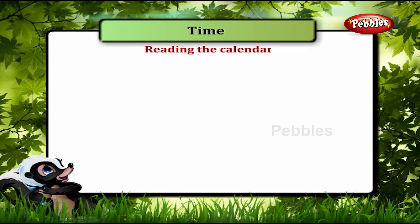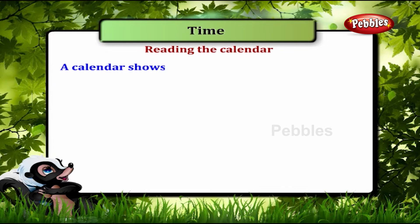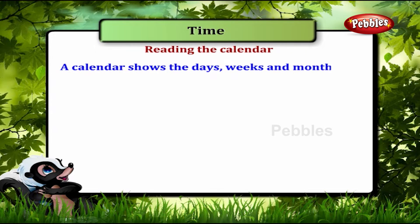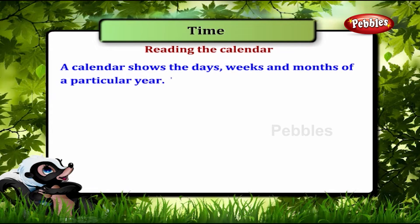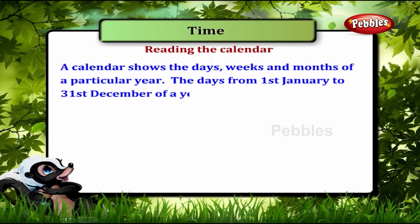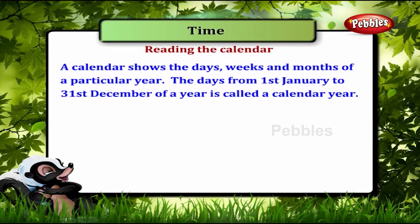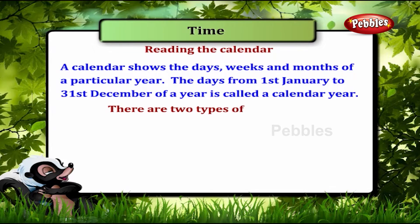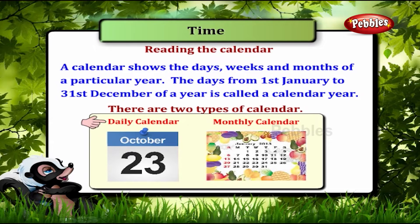Reading the calendar. A calendar shows the days, weeks and months of a particular year. The days from 1st January to 31st December of a year is called a calendar year. There are two types of calendar: daily calendar and monthly calendar.